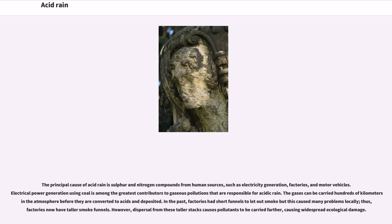The principal cause of acid rain is sulfur and nitrogen compounds from human sources, such as electricity generation, factories, and motor vehicles. Electrical power generation using coal is among the greatest contributors to gaseous pollutions that are responsible for acidic rain. The gases can be carried hundreds of kilometers in the atmosphere before they are converted to acids and deposited. In the past, factories had short funnels to let out smoke but this caused many problems locally; thus, factories now have taller smoke funnels. However, dispersal from these taller stacks causes pollutants to be carried farther, causing widespread ecological damage.